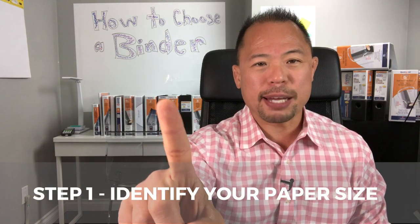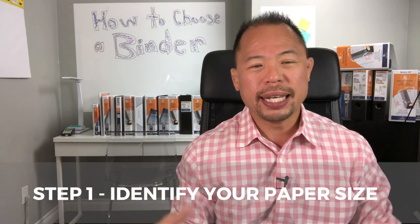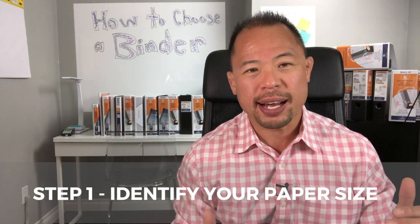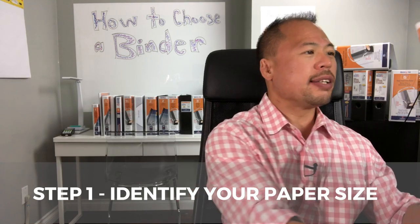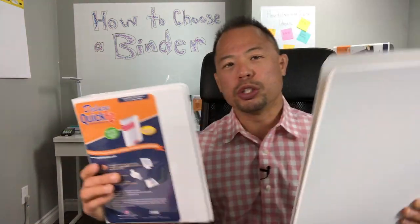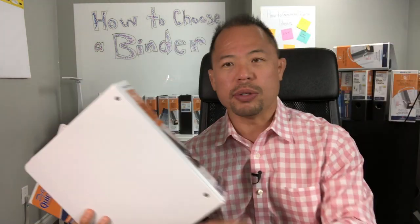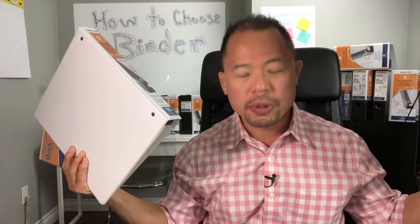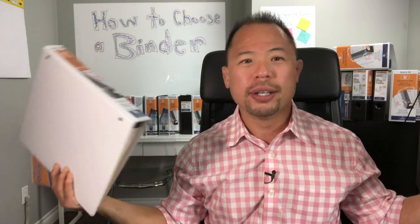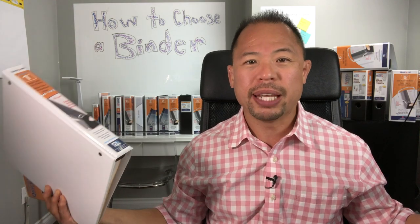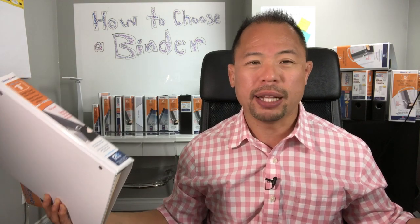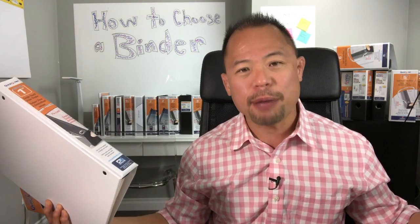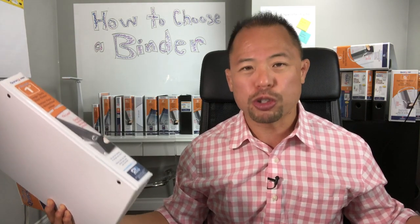Step number one is choosing your page size. The size of the document will determine the size of the binder that you use. As you can see we have different options for our binders. So step number one: what size document are you going to be using? Is it 8.5 by 11? Is it legal landscape? Is it legal portrait?